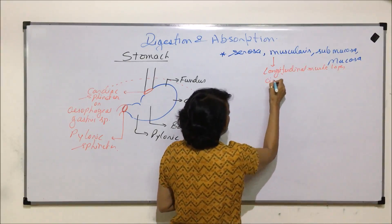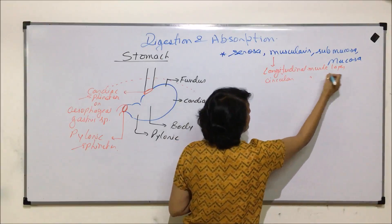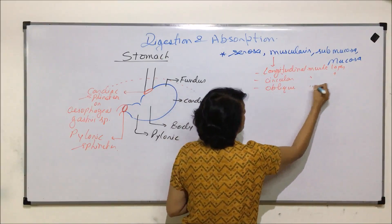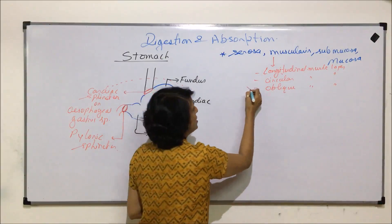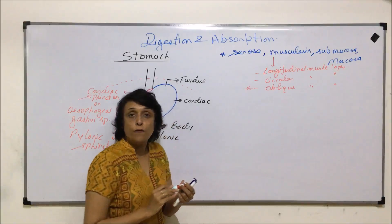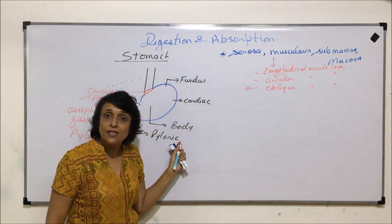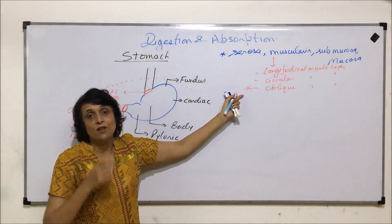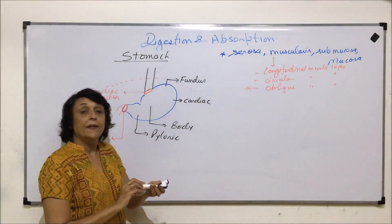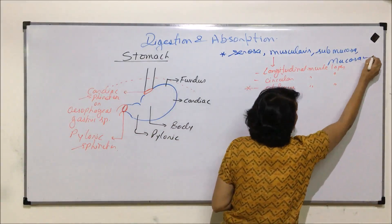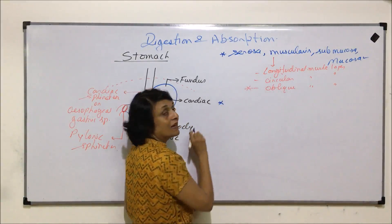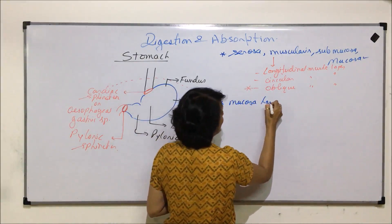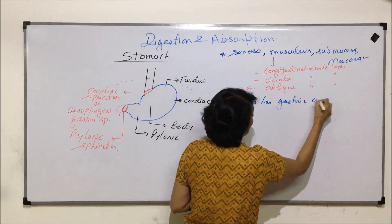In addition, the stomach has an oblique muscle layer — this is a unique feature of the muscularis part of the stomach. Only the stomach has this muscular layer where the muscle fibers are oblique. The mucosa part has gastric glands.